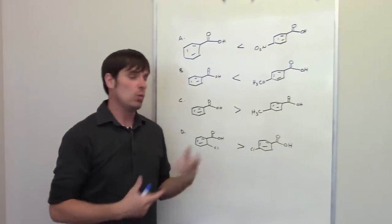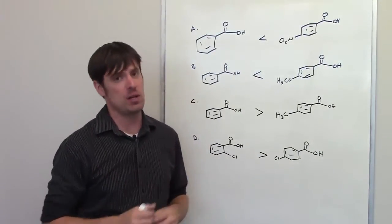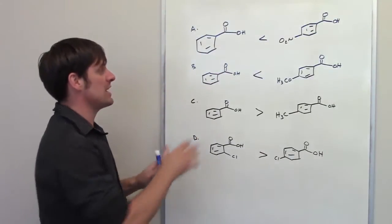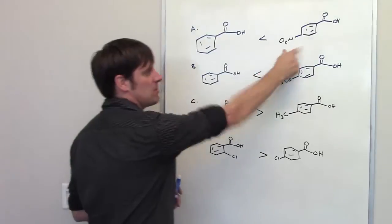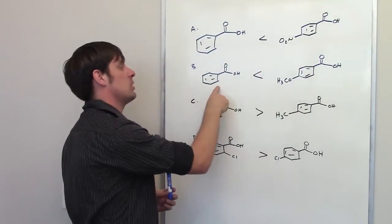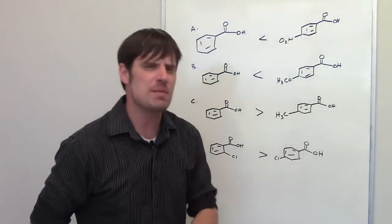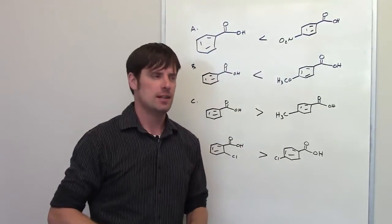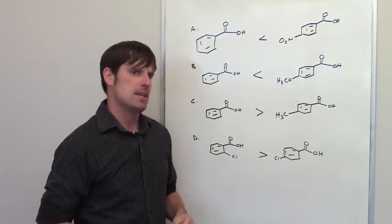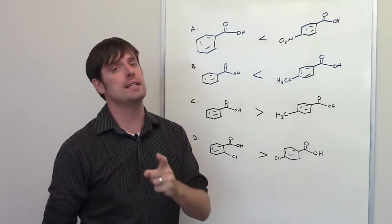In this question we're asked which of these statements is false in terms of the relative acidities of the molecules shown. Statement A is suggesting that the molecule to the left is less acidic than the molecule to the right. Statement B is suggesting the same comparison, and so on. Which of these statements is true and which one is false? You might see this kind of thing on a standardized exam, so let's figure out which ones are true and which one is false.